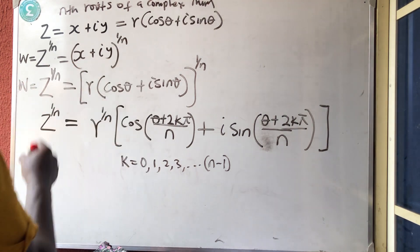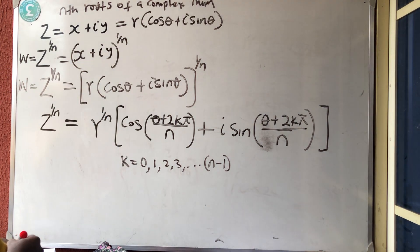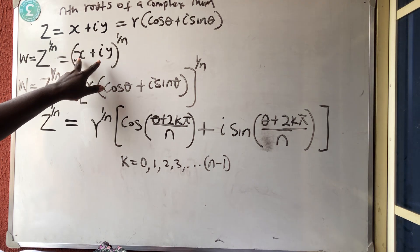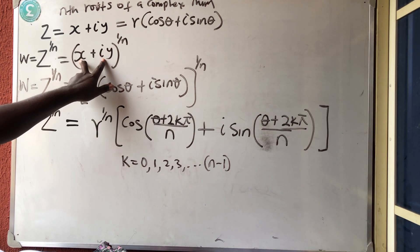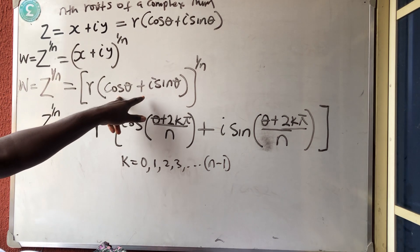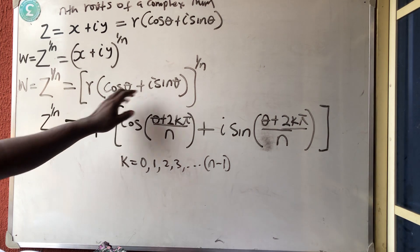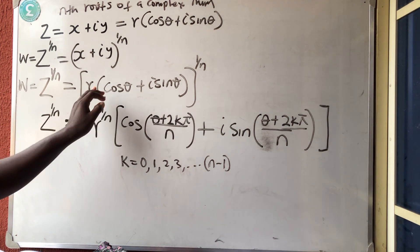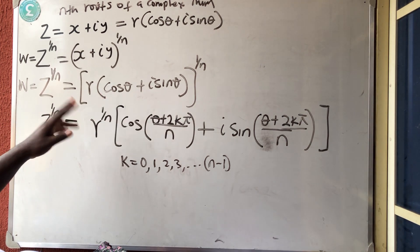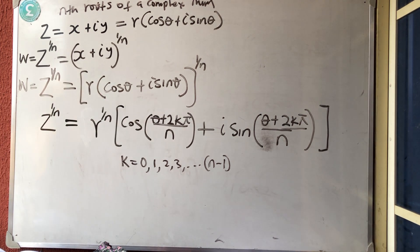To get the nth root of a complex number, the first thing we need to do is to change it from the Cartesian to the polar form. Once you can change it from the Cartesian to the polar form, then do the same thing you did in the other one.